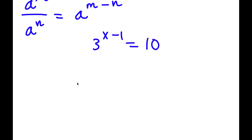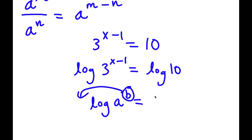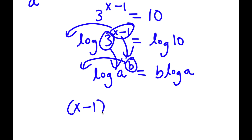Now to solve this, I'm going to take the log on both sides. So I have log 3 to the power of x minus 1 is equal to log 10. An important property of logarithms is that log a to the power of b equals b times log a, so I can move the exponent to the front. So now I have x minus 1 times log 3 is equal to log 10.